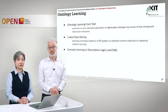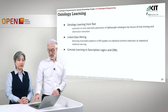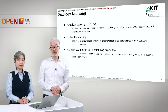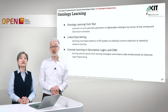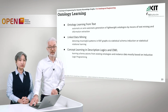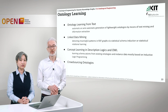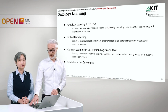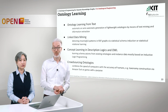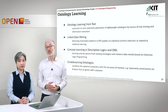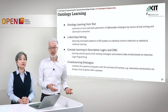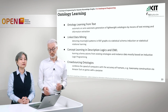You could also do concept learning in description logics and OWL, where you learn schema axioms from existing ontologies and instance data, mostly based on inductive logic programming. Or we do crowdsourcing ontologies, which combines the speed of computers with the accuracy of humans — for example, for taxonomy construction via Amazon Mechanical Turk or via games with a purpose.